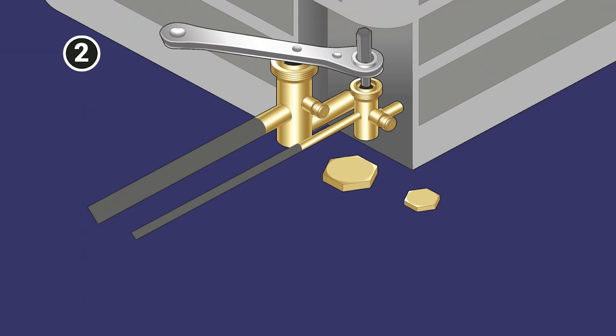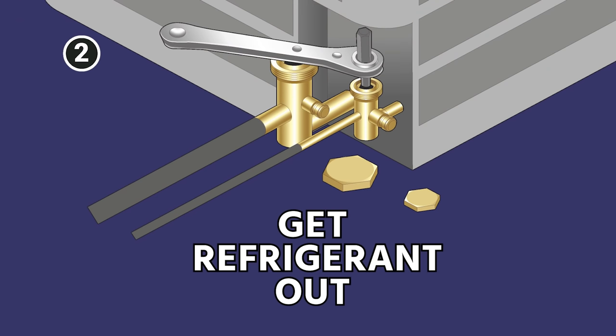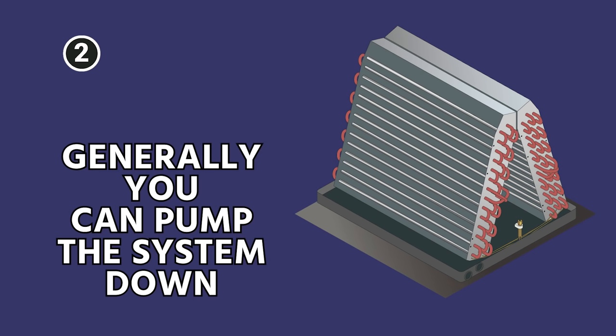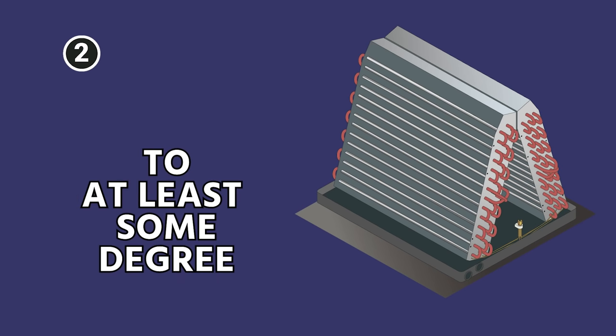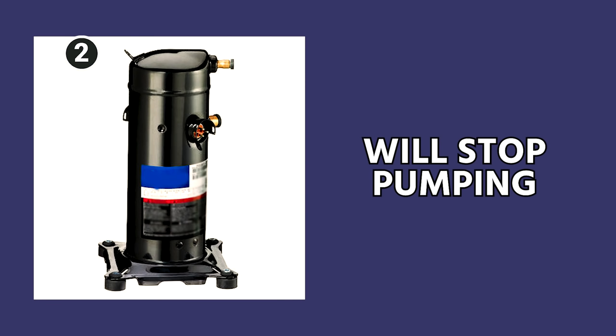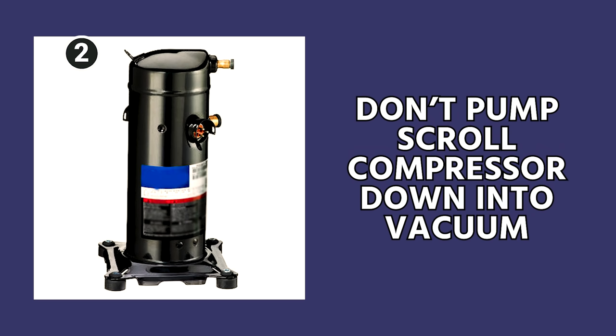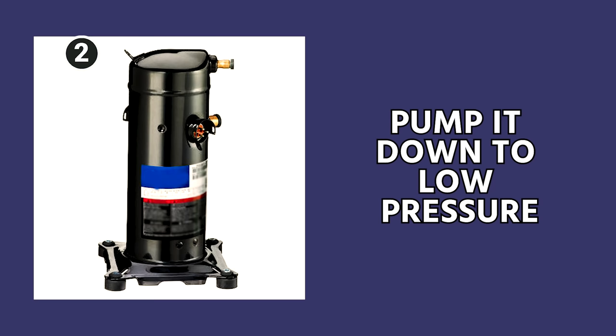Once you do that, then you want to go ahead and get the refrigerant out. Because it's an evaporator coil, generally you can pump the system down to at least some degree. In many cases nowadays, when you have scroll compressors, scroll compressors will actually stop pumping once the compression ratio gets too high, but some of them will still work okay. You never want to pump a scroll compressor down into a vacuum or really any system, but you do want to pump it down to a low pressure.